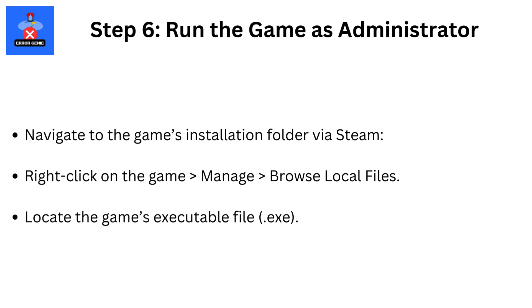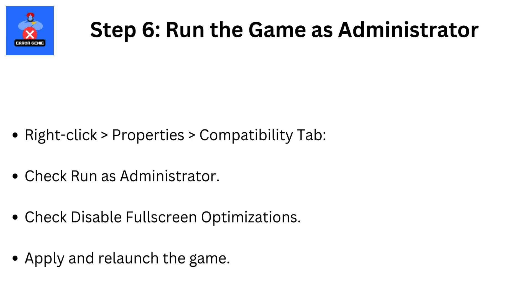Step 6: Run the game as administrator. Navigate to the game's installation folder via Steam. Right-click on the game, then Manage, then Browse Local Files. Locate the game's executable file (.exe). Right-click, then Properties, then the Compatibility tab. Check Run as Administrator and check Disable Full Screen Optimizations. Apply and relaunch the game.